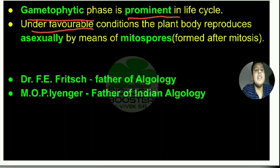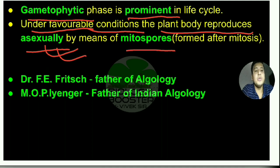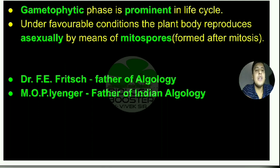Under favorable conditions, the plant body reproduces asexually. Both sexual and asexual modes of reproduction are found in algae, but asexual reproduction is more common. The plant body reproduces asexually by means of mitospores — spores which are produced after mitosis are called mitospores.